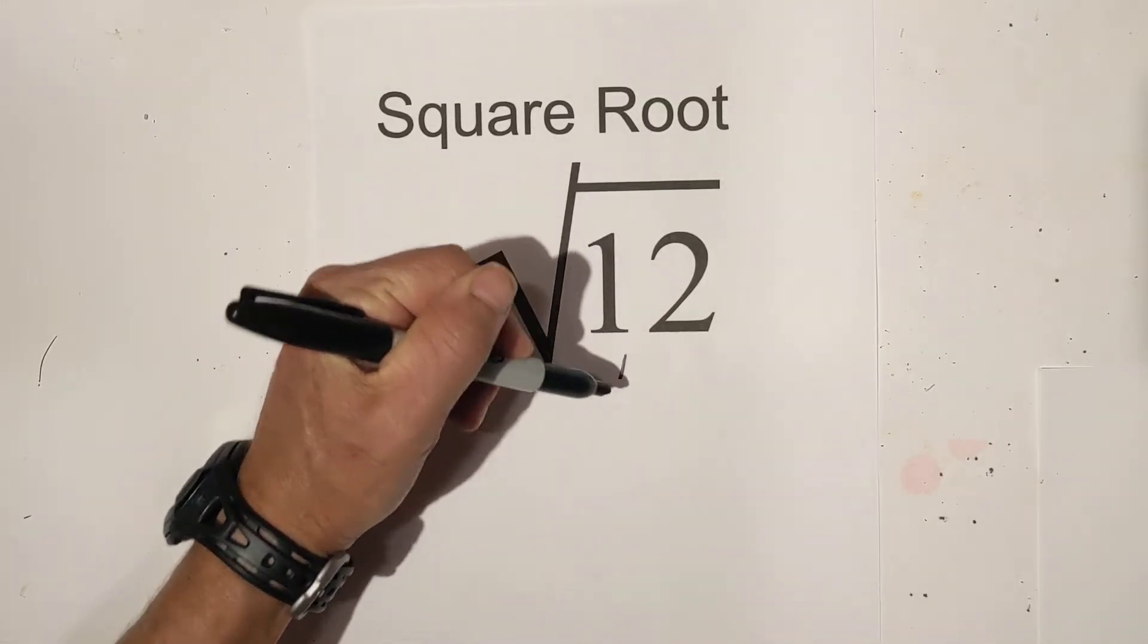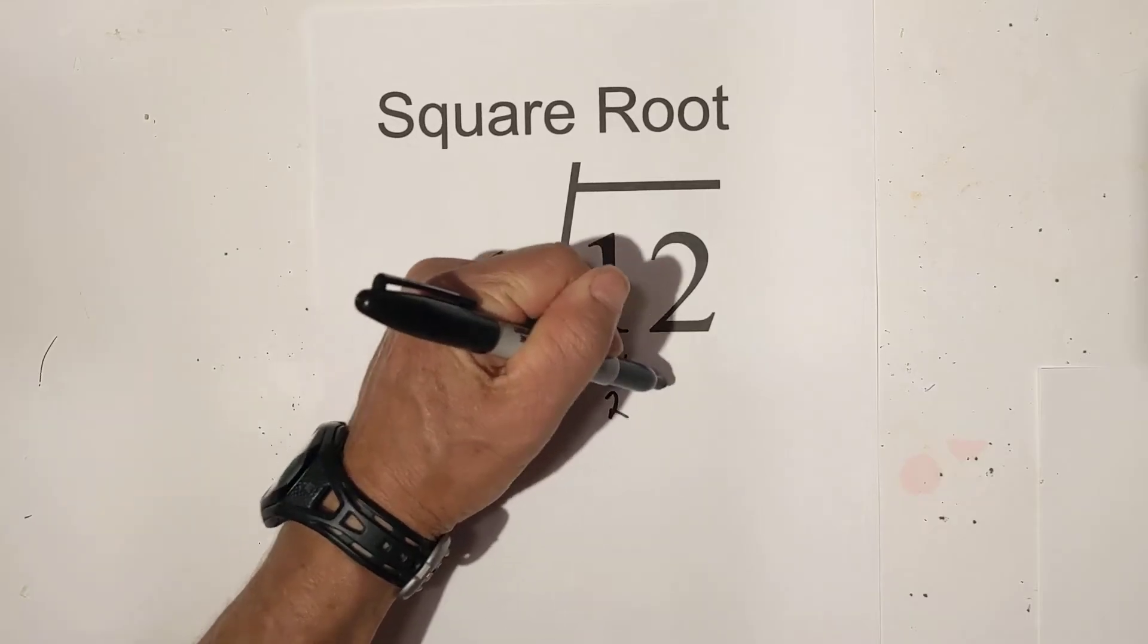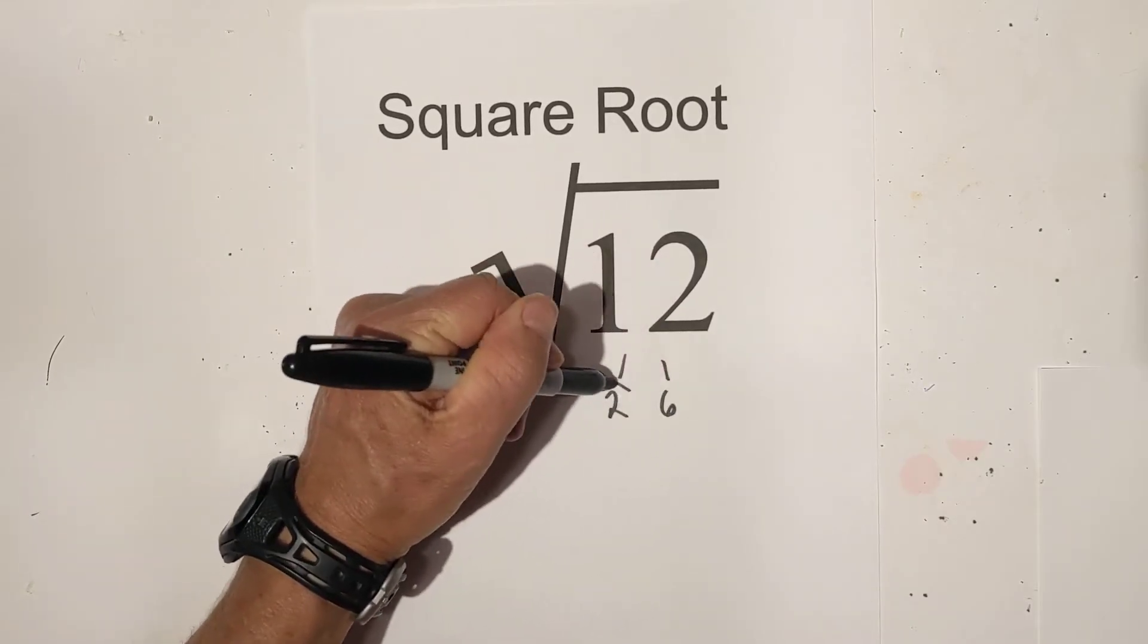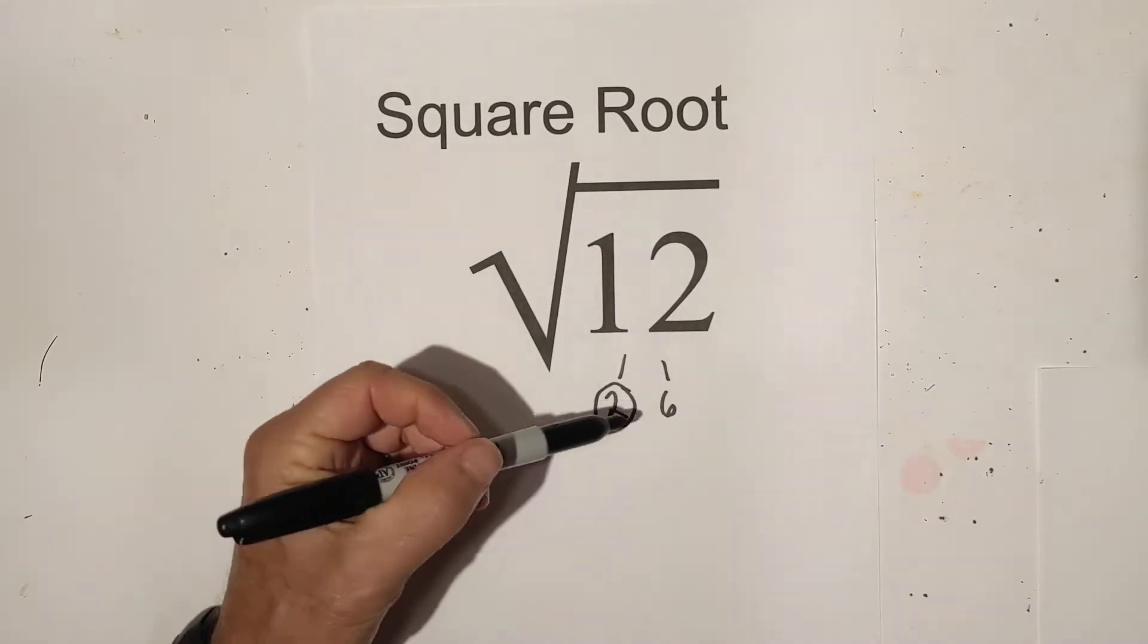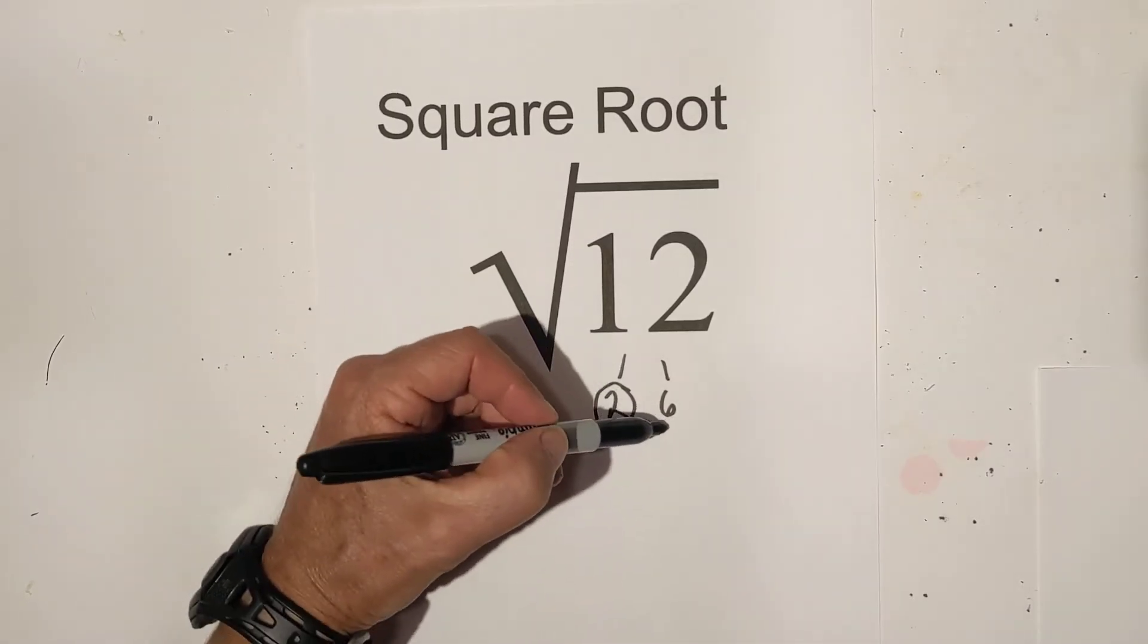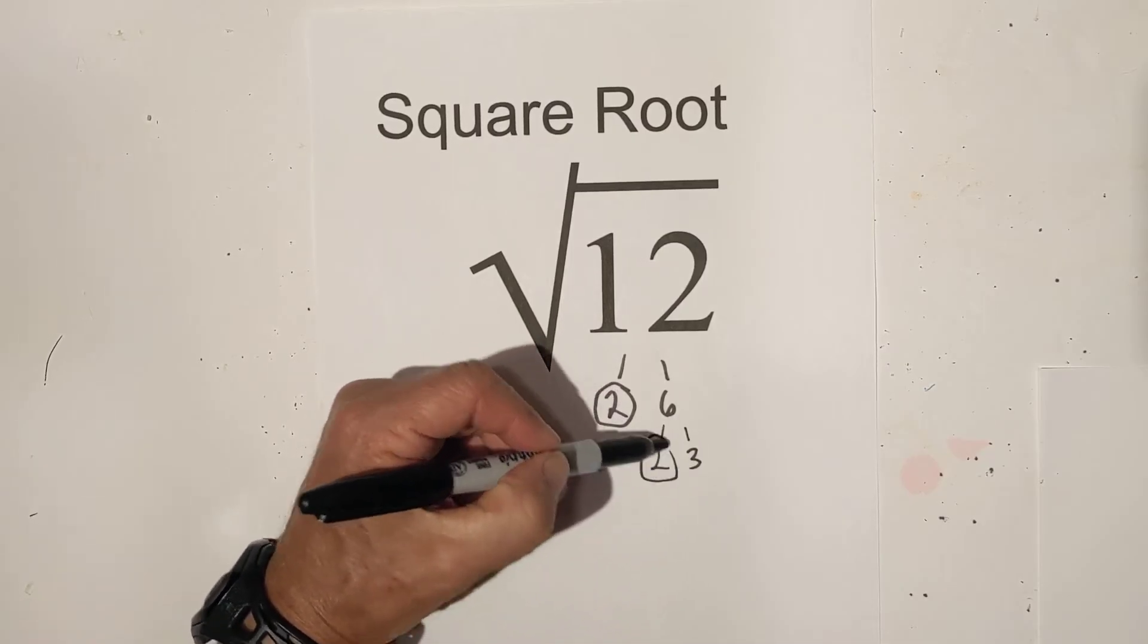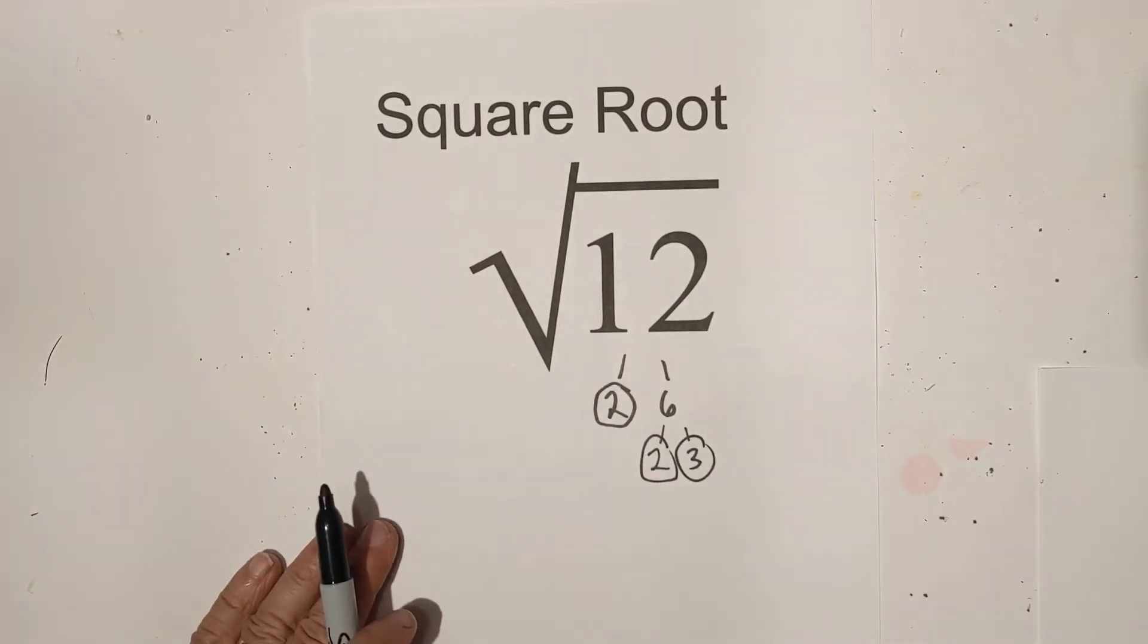First thing I'm going to do is create a factor tree. Let's start with two times six. And the goal of a factor tree is to get down to just prime numbers. So I circle the two because it is prime. Now if I go two times three, we are down to prime numbers.